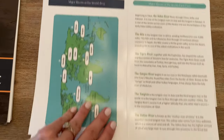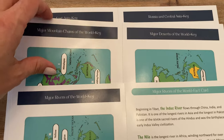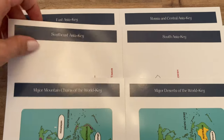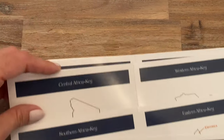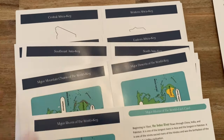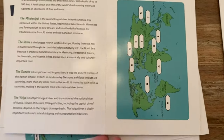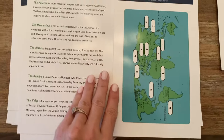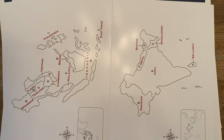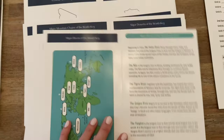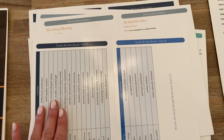These are all of the geography cards and they are pretty extensive. You have major rivers, major mountain chains, major deserts, and then all of the different continents. Each card gives you explanations and shows them on the map — the idea is that you are supposed to memorize these. So those are the geography, poetry, and Greek and Latin root word cards.